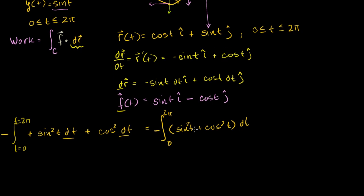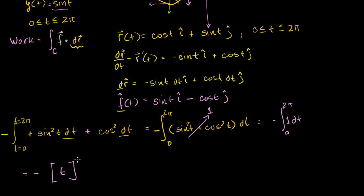We know that sin²(t) + cos²(t) = 1, which follows from the unit circle definition of our trig functions. So our integral reduces to minus the integral from 0 to 2π of dt, which equals minus the integral of 1 dt from 0 to 2π. The antiderivative of 1 is just t, evaluated from 0 to 2π, giving us −(2π − 0) = −2π.